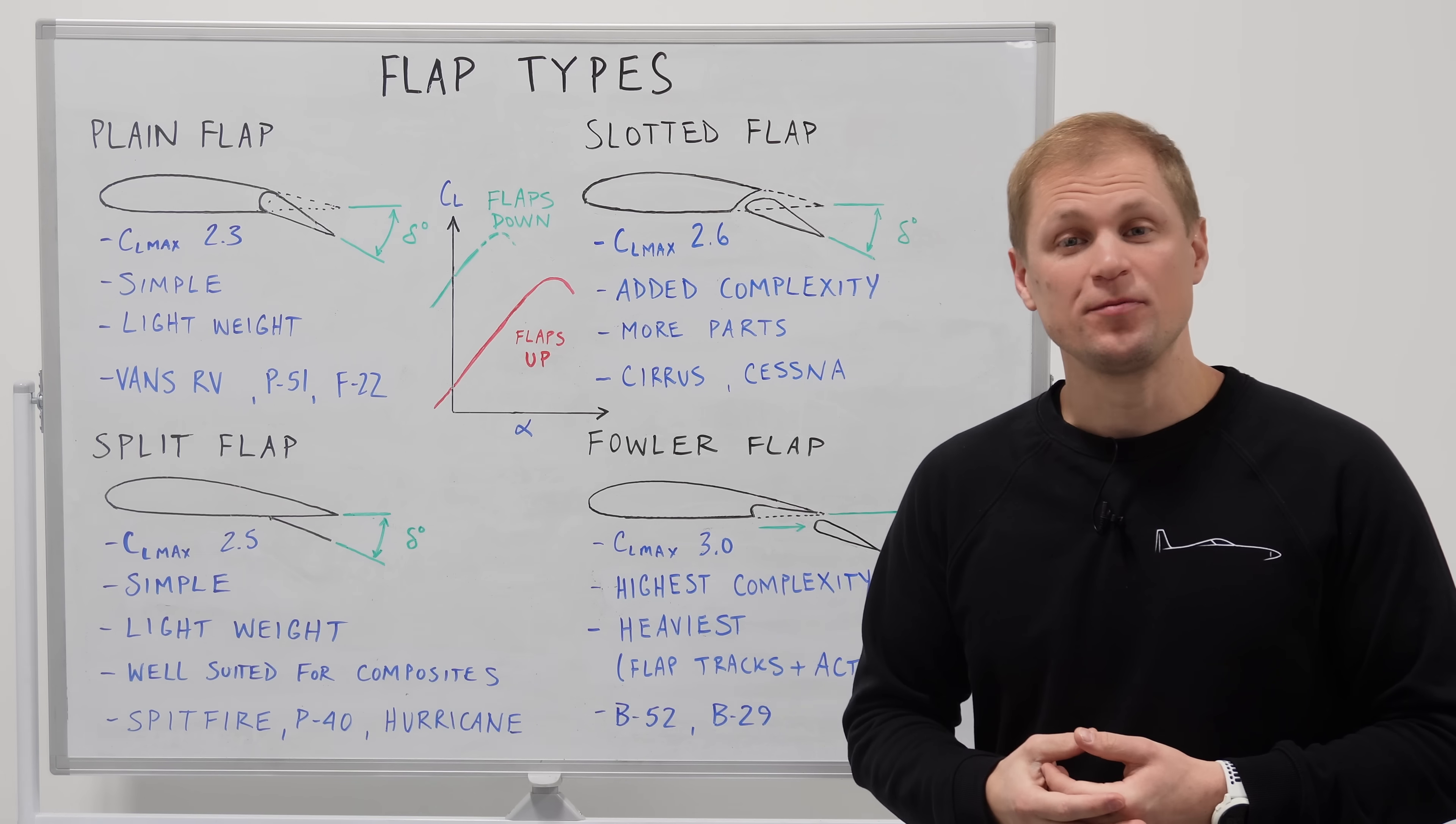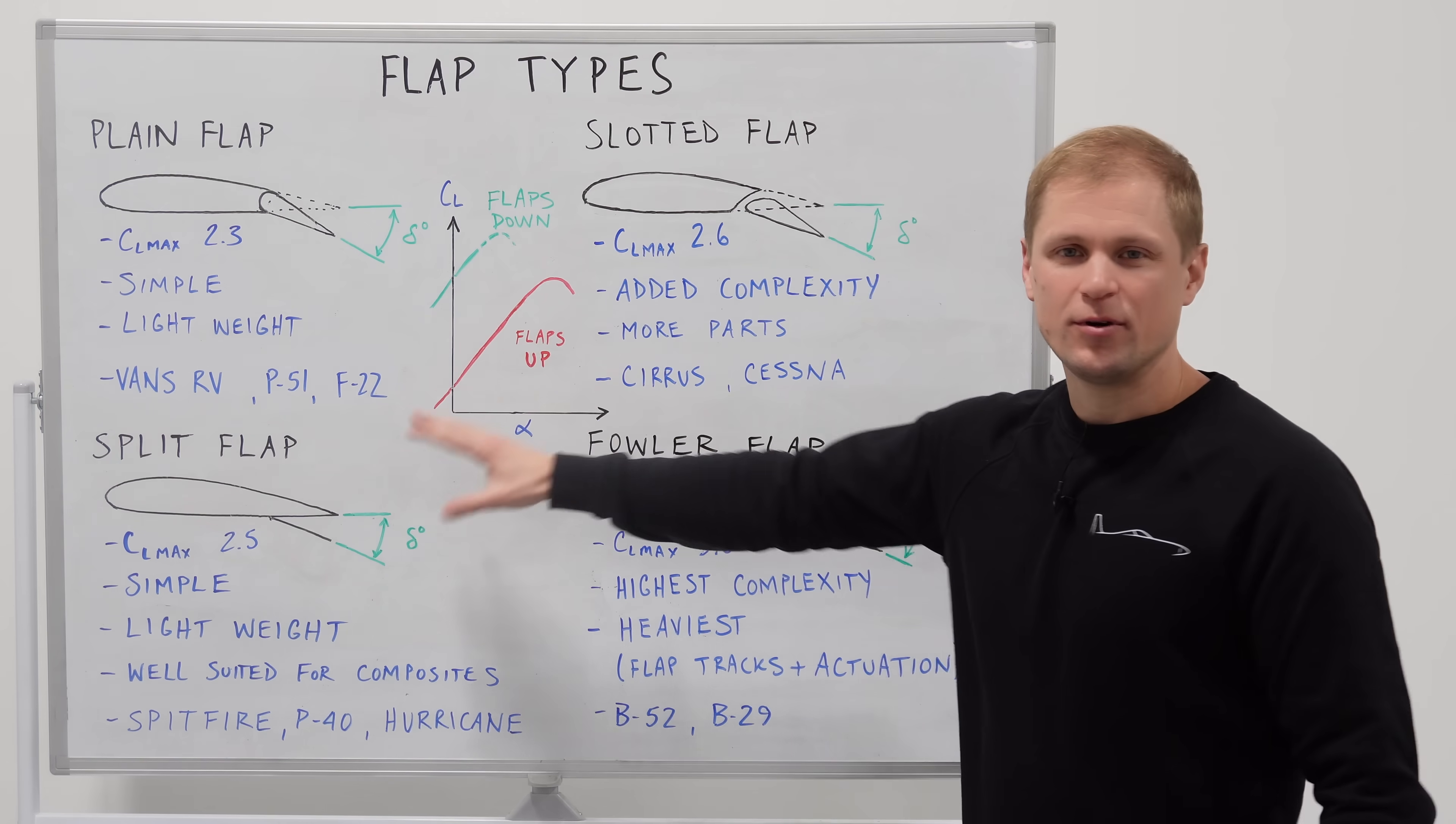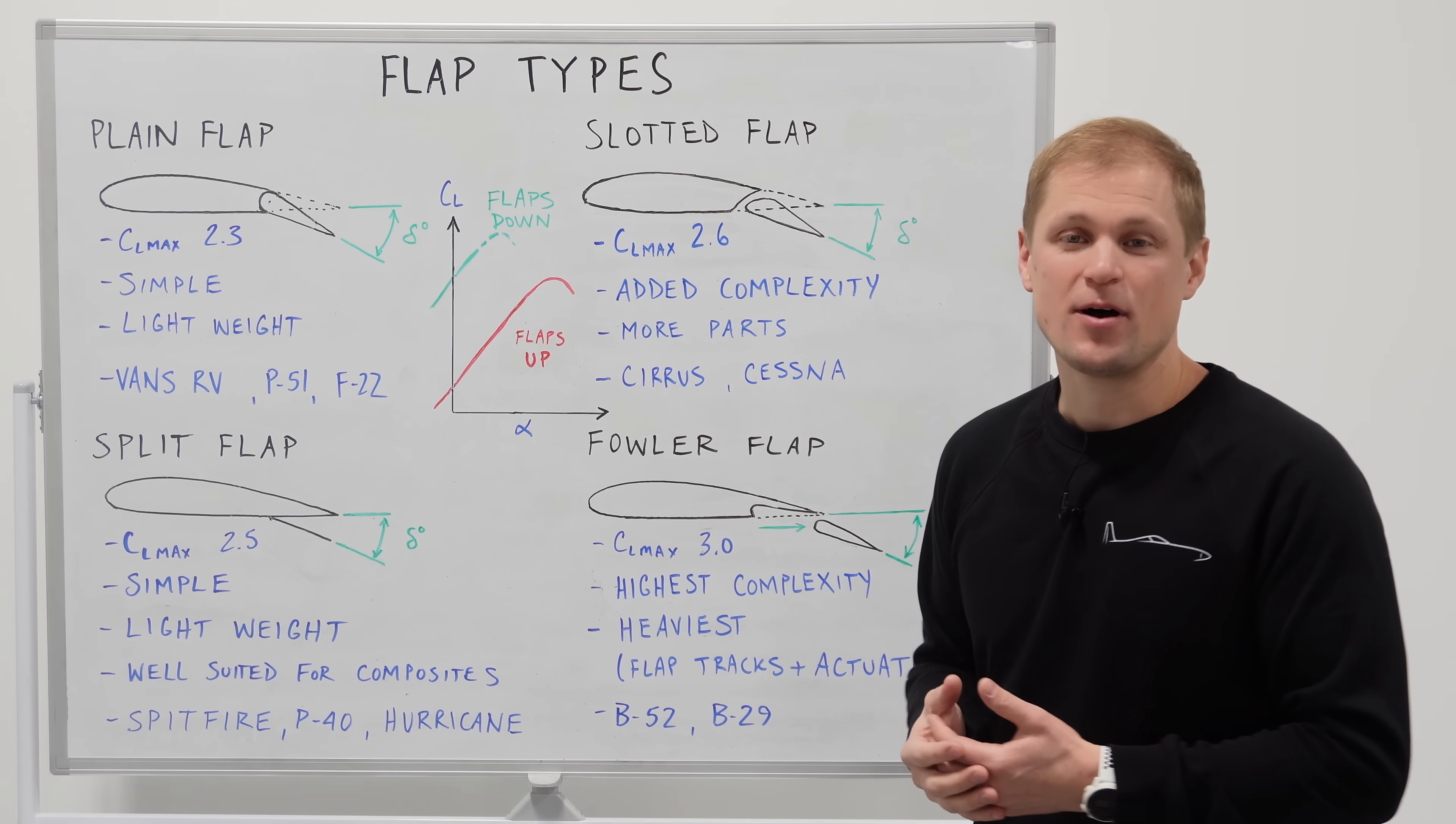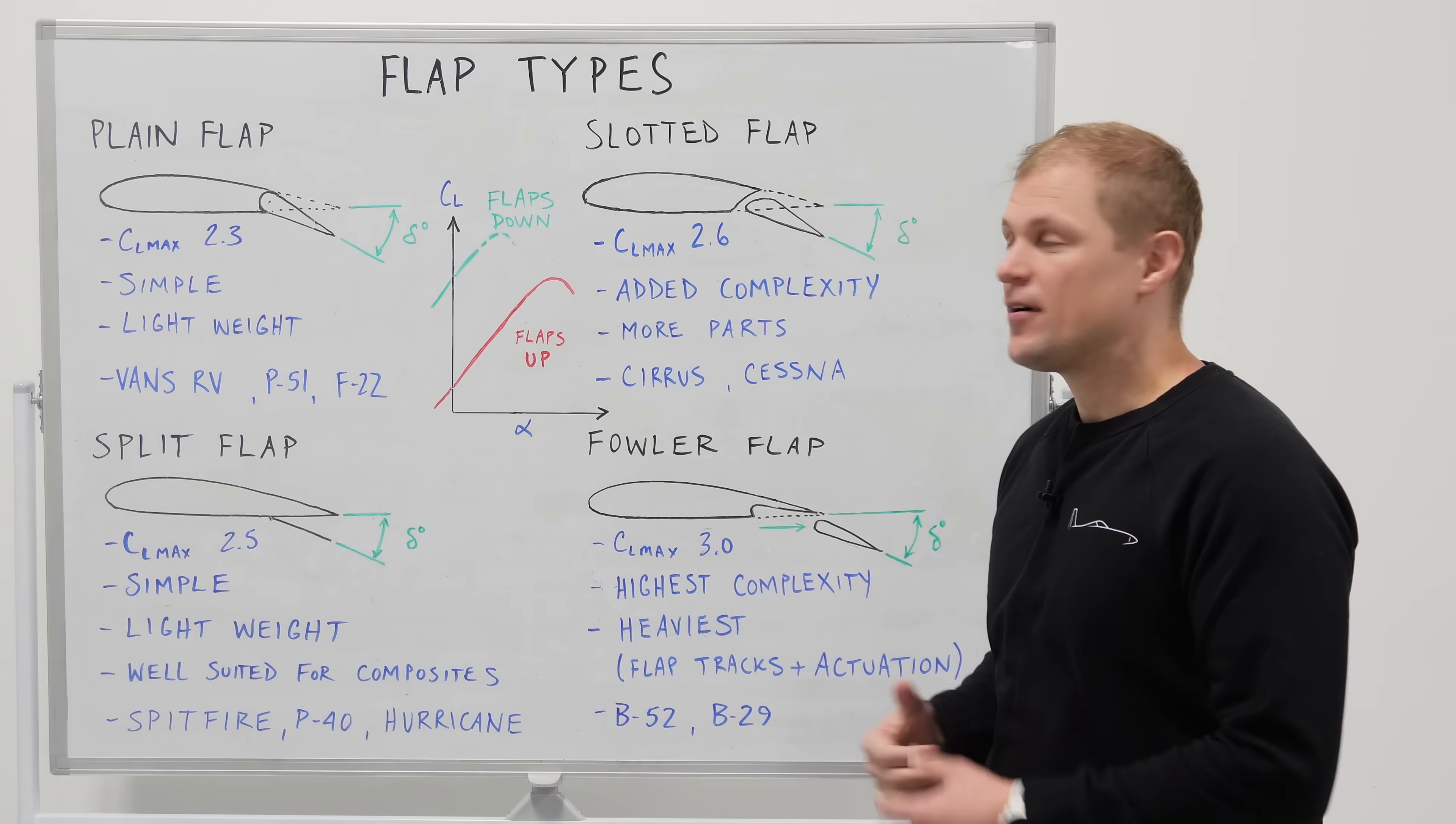To explain why we picked a split flap for the Dark Arrow 1, I thought it'd be good to show a couple different options of what other flap types are out there so we can see what different decisions we were looking at with our flap design. I've got a couple different common flaps drawn out on the board here. This isn't every single flap type out there, but this is probably about 90% of what you'll see in general aviation. We have the plain flap, split flap, slotted flap, and the Fowler flap.